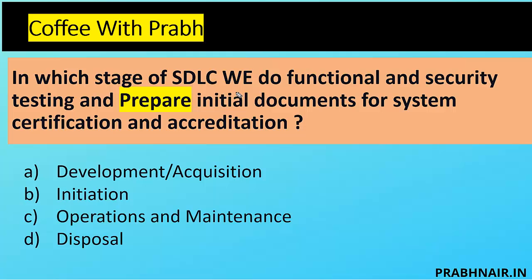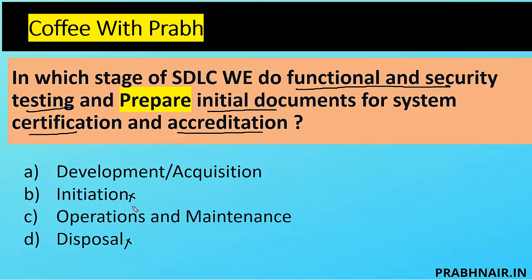Next coffee shot: In which stage of the SDLC do we conduct functional and security testing and prepare the initial documents for system certification and accreditation? Certification is the technical evaluation of a product; accreditation is management acceptance. The question asks about conducting testing and preparing documents — not completing them. Initiation and Operation/Maintenance are removed. Development/Acquisition is the stage where we do security testing and prepare certification documents to onboard a vendor, so the answer is A.